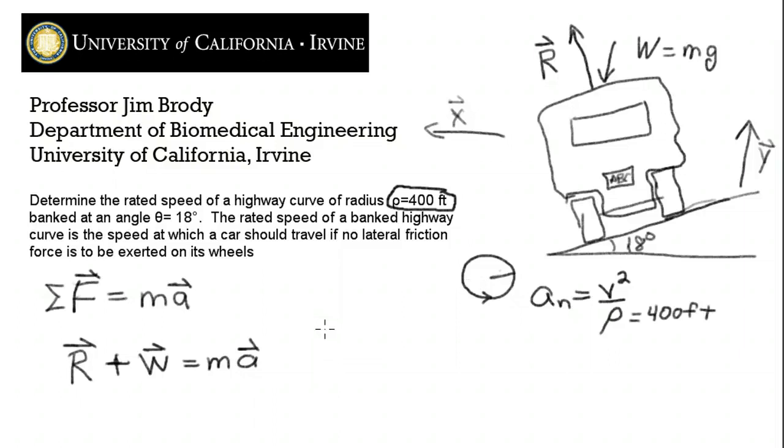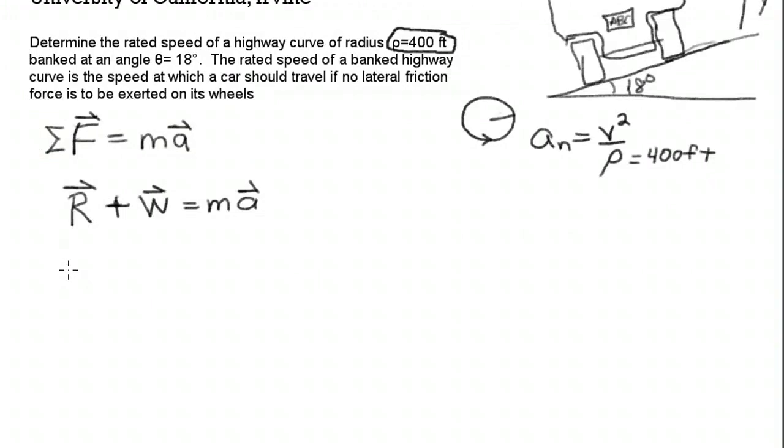So we're going to first do the y components of the acceleration. And so we know that the sum of all just the y components should be equal to zero because there's no lift, there's no direction off the ground. The car isn't flying. So what do we have to write here? We've got R cos θ. That's the this part for the y components minus the weight equals zero.